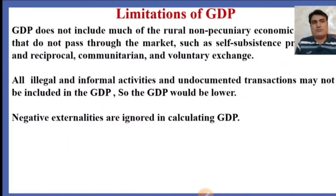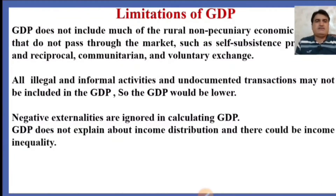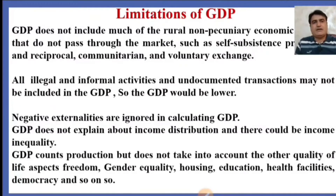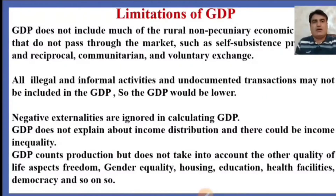Externalities means the cost or benefit incurred on a third party by an individual or firm, for which they are not penalized nor awarded. GDP does not explain about income distribution, and there could be income inequality. GDP counts production but does not take into account other quality of life aspects like freedom, gender equality, housing, education, health facilities, democracy, etc. These are the limitations of using the method of increase in real GDP over time.